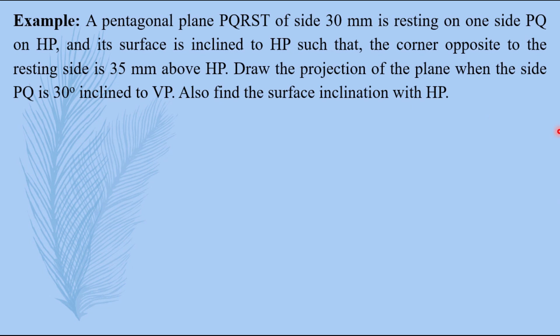Let us take the question. A pentagonal plane PQRST of side 30mm is resting on one of its side PQ on HP and its surface is inclined to HP, such that the corner opposite to the resting side is 35mm above HP. Draw the projections of the plane when the side PQ is 30 degrees inclined to VP. Also find the surface inclination with HP.